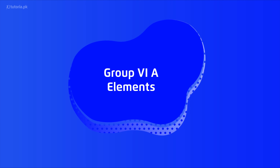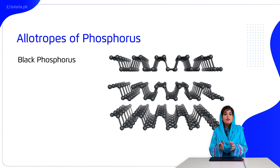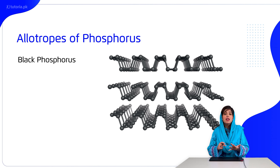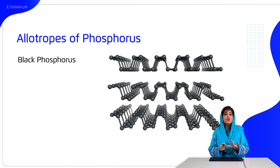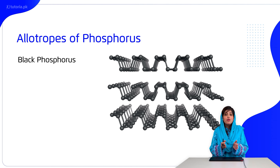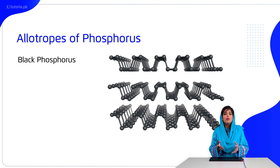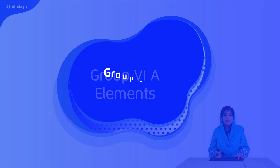Phosphorus compounds discussed include chlorides — phosphorus trichloride and phosphorus pentachloride — oxides including phosphorus trioxide and pentoxide, and oxy acids including orthophosphoric acid and phosphorous acid, with their preparation mechanisms and reactions.